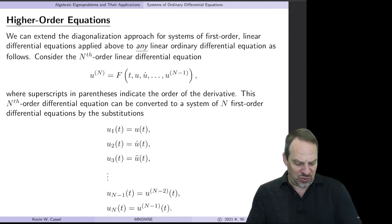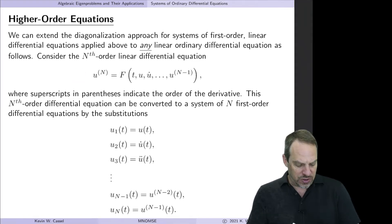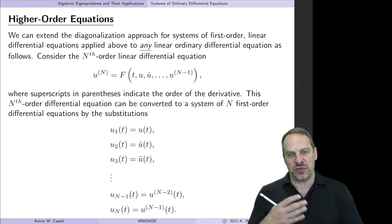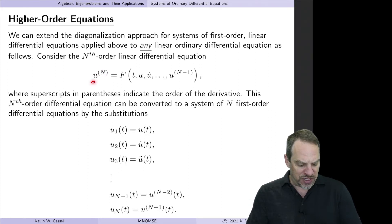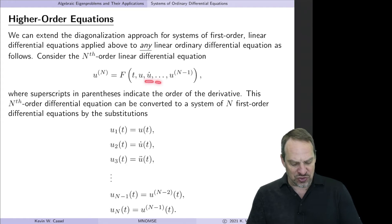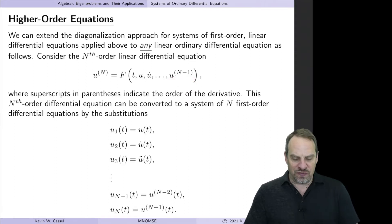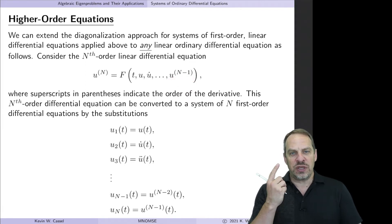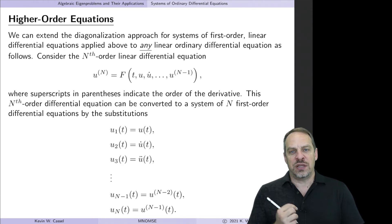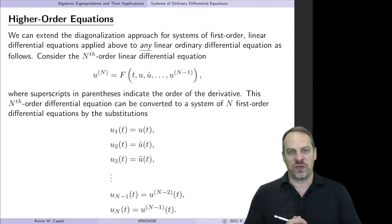Suppose we have a capital N-th order ordinary differential equation. The superscript N in parentheses means the N-th derivative, so there's no confusion with powers. The N-th derivative of U is a linear function of the independent variable T, the dependent variable U, its first derivative, second derivative, up to the N minus first derivative. We want to convert this one N-th order ODE into a system of N first-order ODEs that are mathematically equivalent.